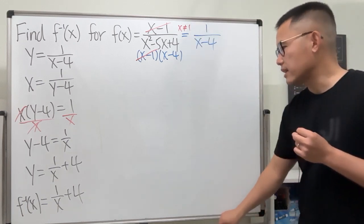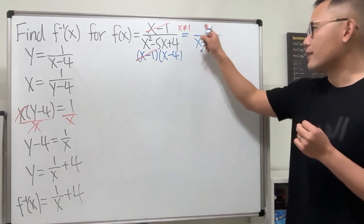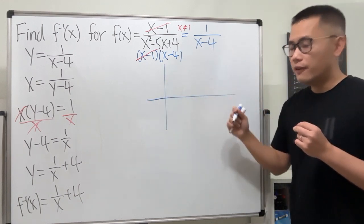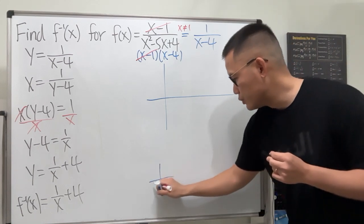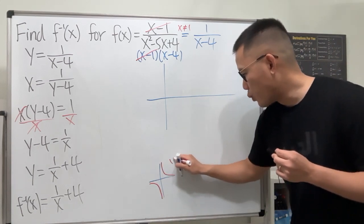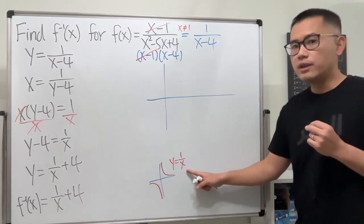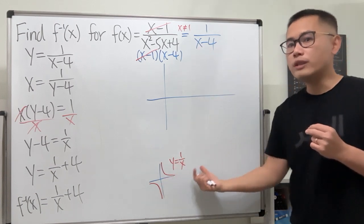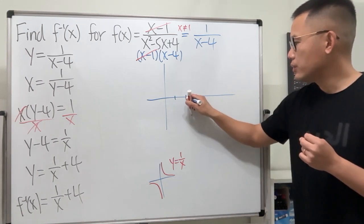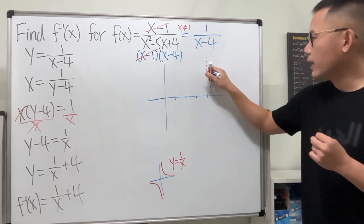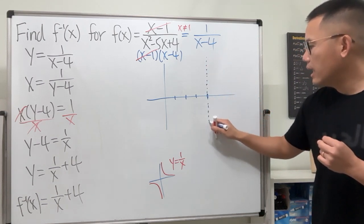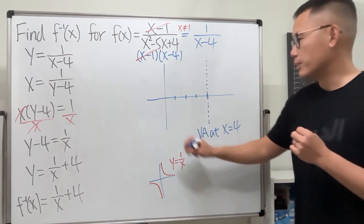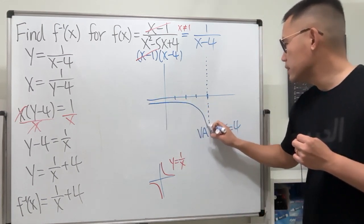The best way to investigate this is to look at the graph. We have 1 over (x minus 4). You should know the graph for 1 over x, which looks like this. Comparing the two, the (x minus 4) means we shift the graph four units to the right, giving us a vertical asymptote at x equals 4.